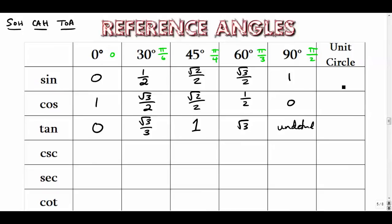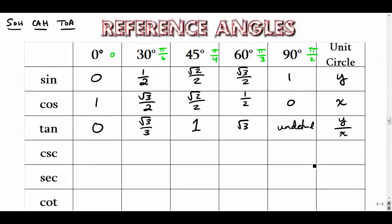Now let's fill in the full column: the sine in terms of the unit circle is the y-value, the cosine is the x-value, and the tangent is sine divided by cosine.